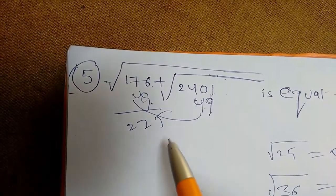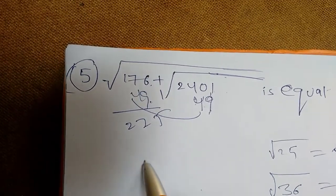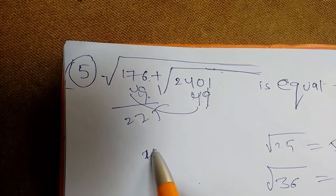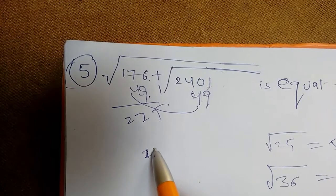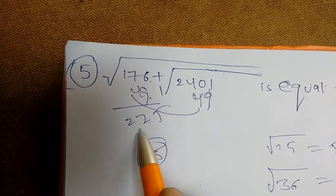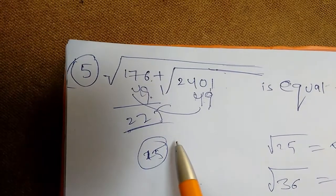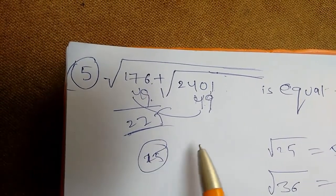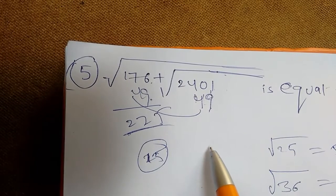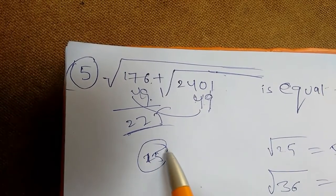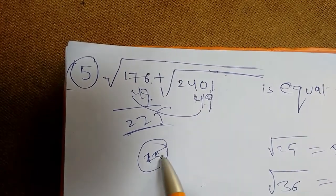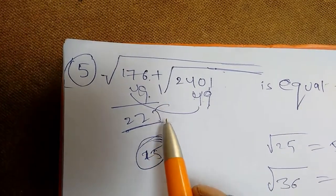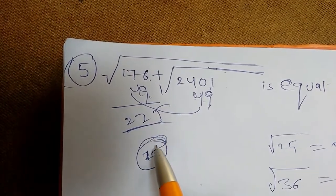This is 15. 15 squared is 225. The difference between 25 and 35 is 15.